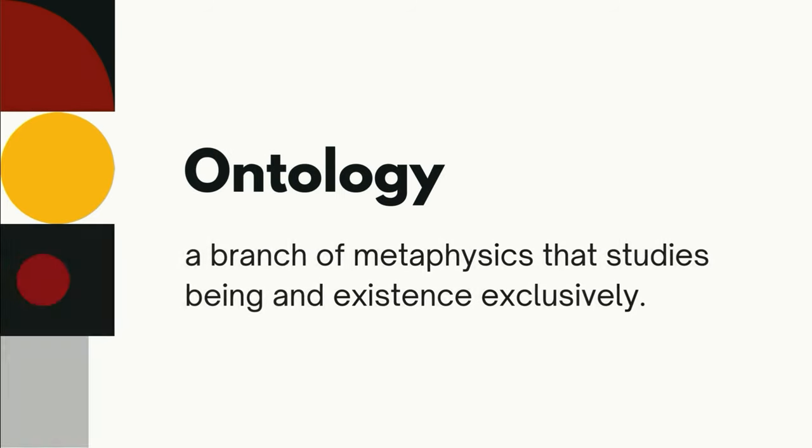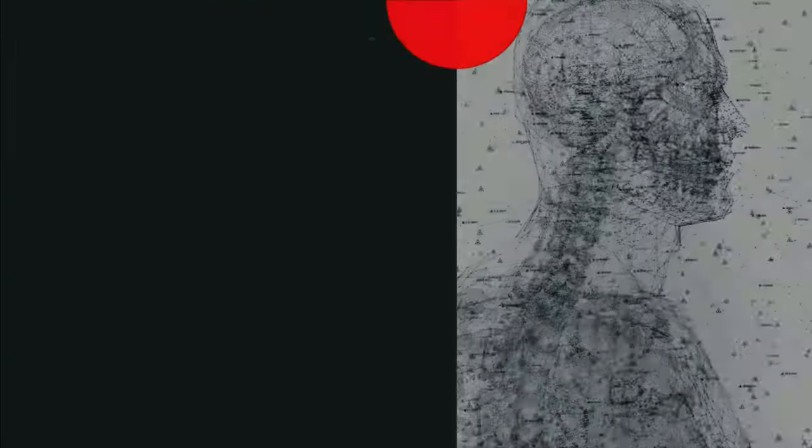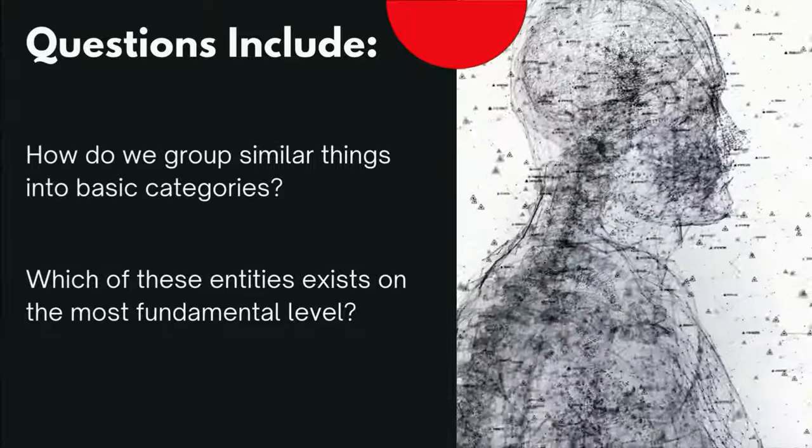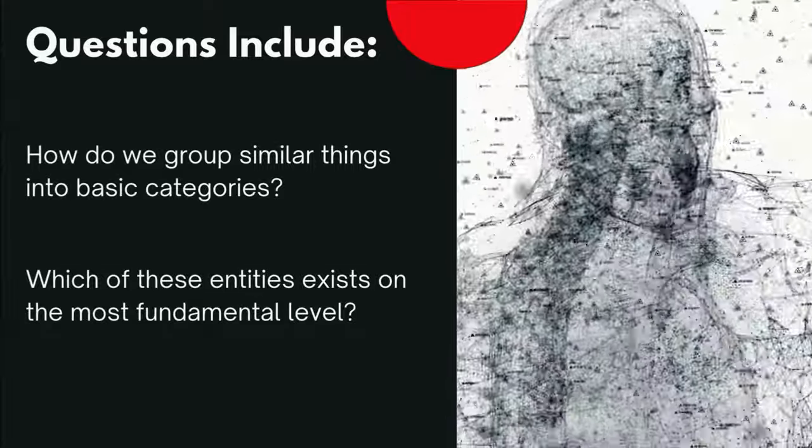Perhaps the best way to define modern metaphysics is to go over some of the big questions it tackles and hopes to solve. I'll go over several different topics, but there are many more like this, and many of these topics overlap with each other. Number one, those of ontology or a branch of metaphysics that studies being and existence exclusively. Ontologists try to determine things about being, like how we group similar things into basic categories.